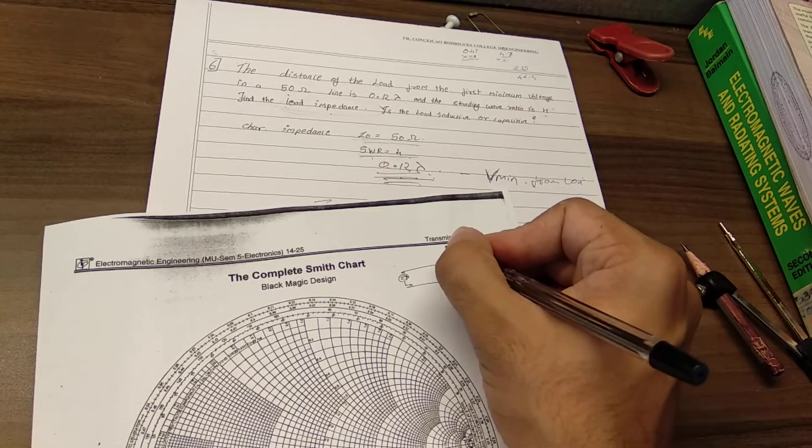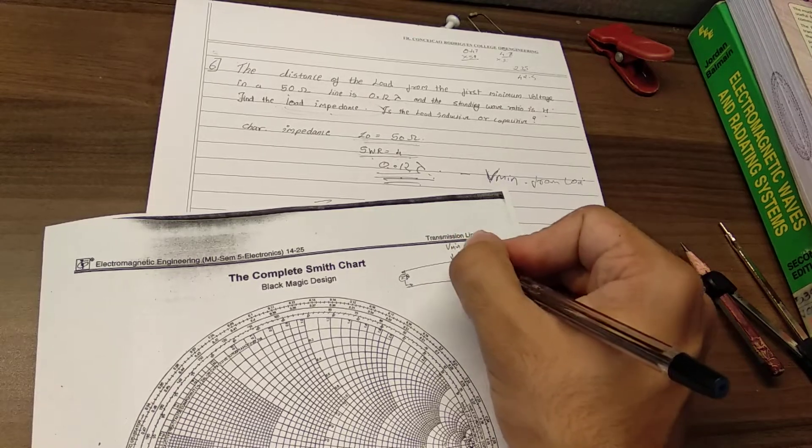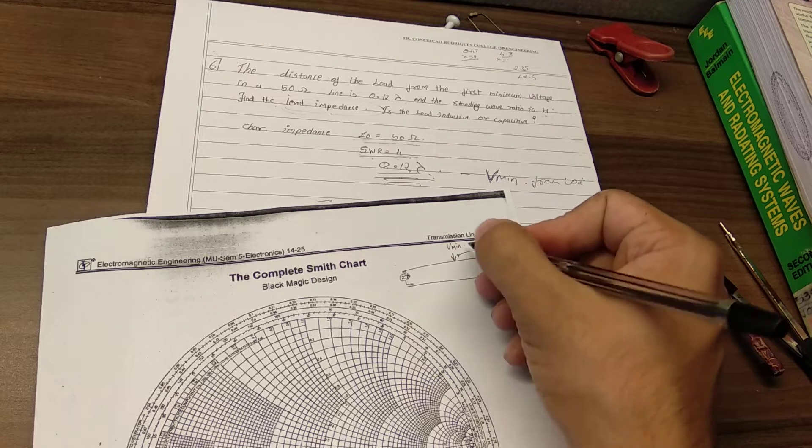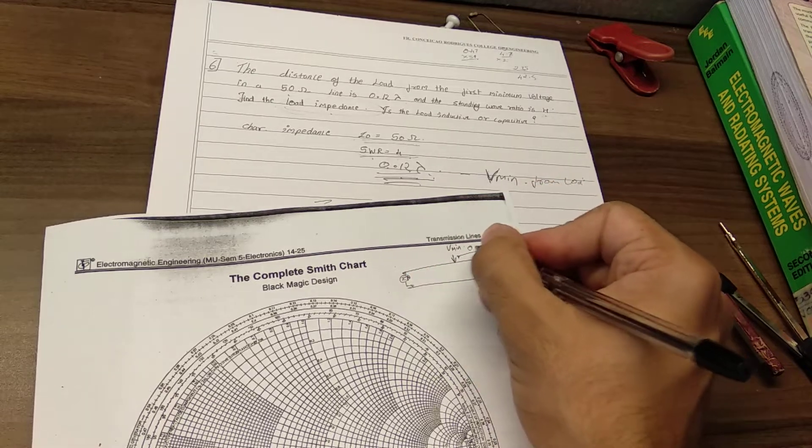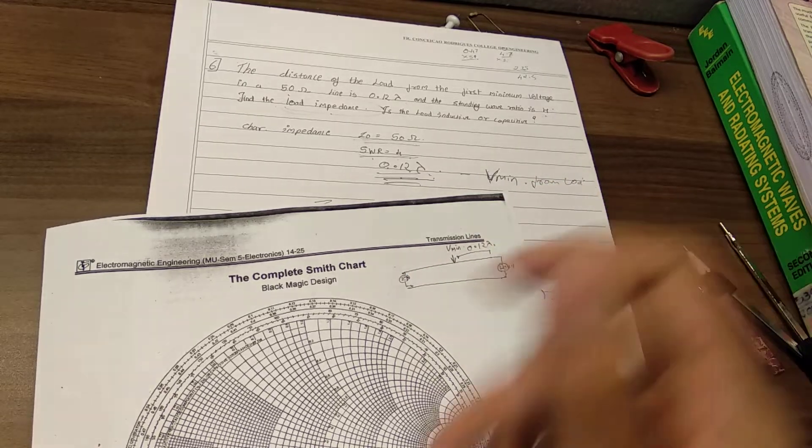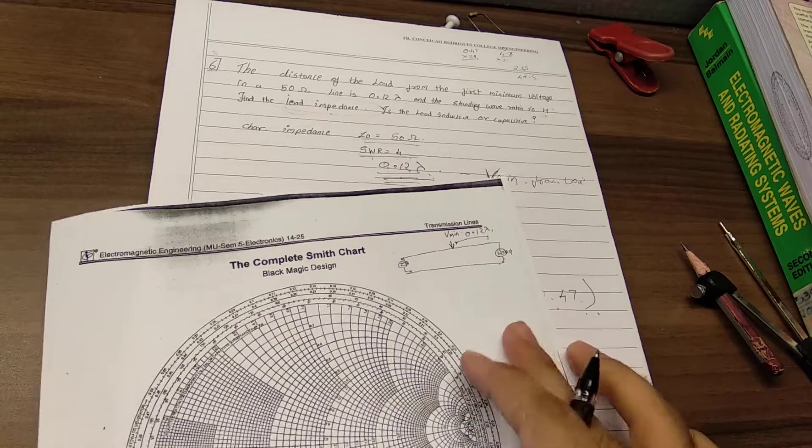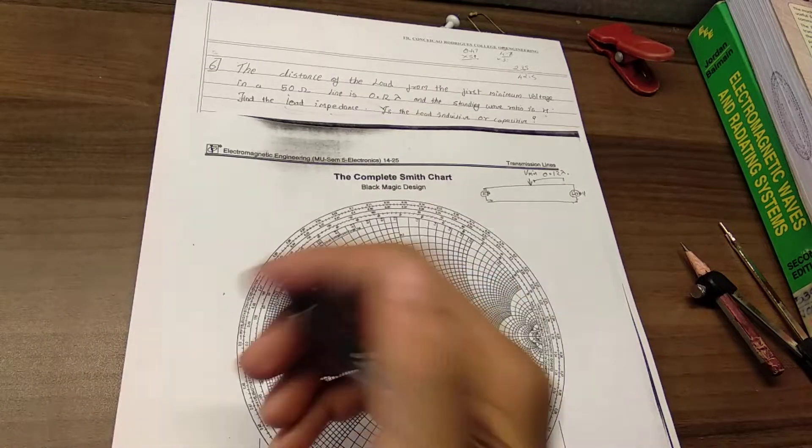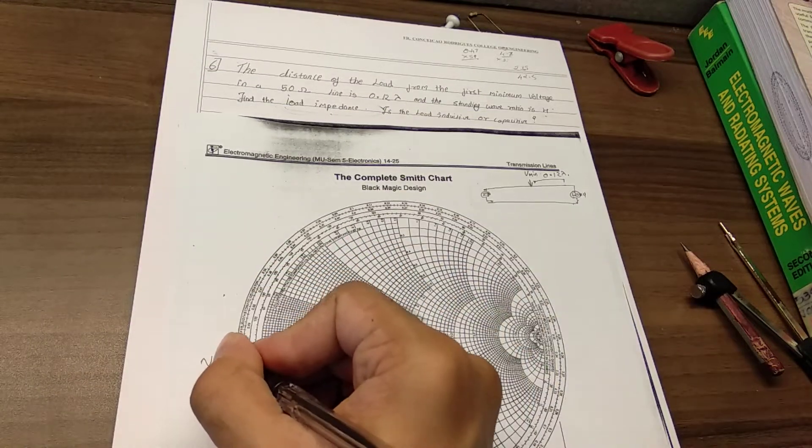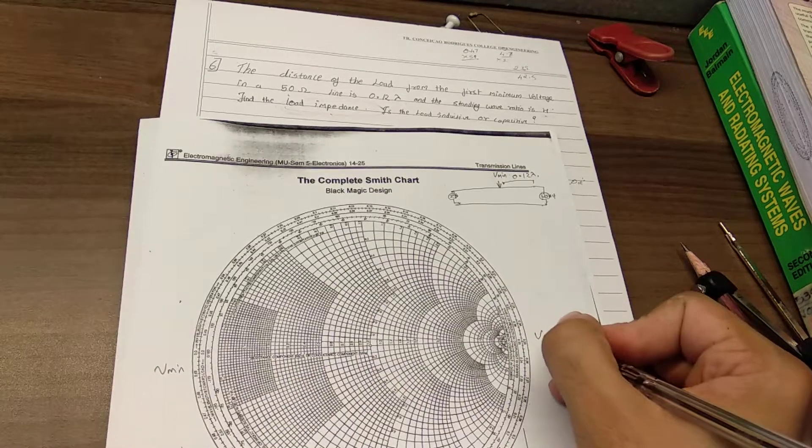My Vmin lies somewhere here, and the distance from the load is 0.12 lambda. So on the Smith chart, my Vmin is over here and Vmax is over here.